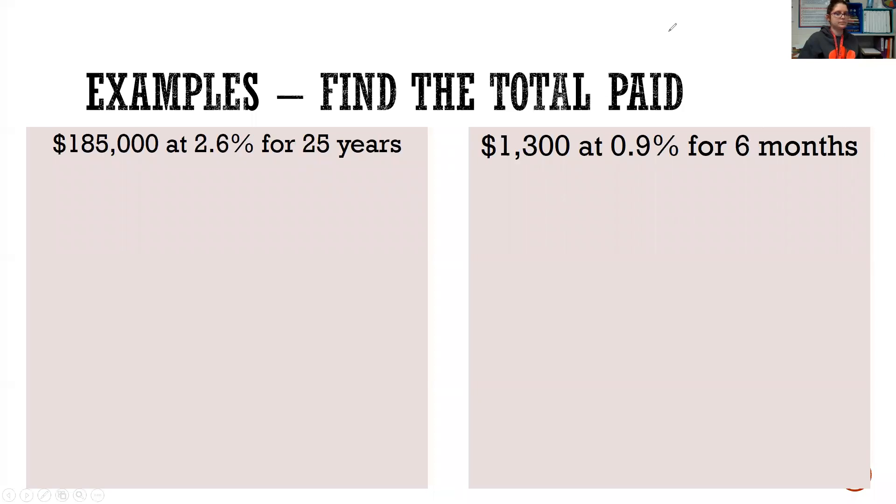Next example. We're going to find the total paid. We don't know if these are loans or investments, but we're going to find the total paid at the end. Remember total equals the principal plus the interest. So we'll have to add those two at the end. So we have $185,000 at 2.6% interest for 25 years. So I'm guessing this is a home mortgage.